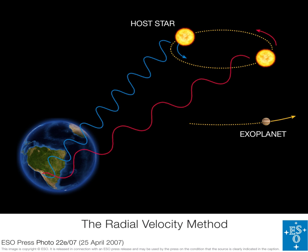A positive radial velocity indicates the distance between the objects was or is increasing; a negative radial velocity indicates the distance between the source and observer was or is decreasing. In many binary stars, the orbital motion usually causes radial velocity variations of several km per second. As the spectra of these stars vary due to the Doppler effect, they are called spectroscopic binaries.